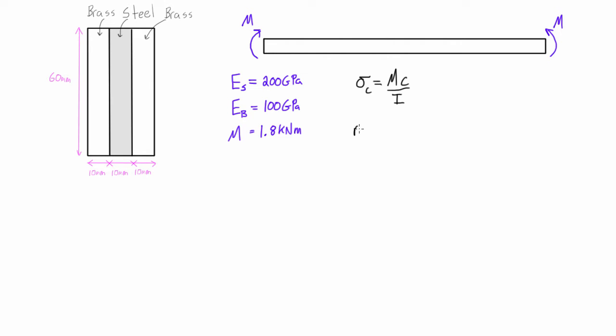So that factor, let's convert everything to brass here. So what we do is we take the ratio of Es over Eb. So this is the material that we will be transforming over the material that we're transforming into. So we get 200 gigapascals over 100 gigapascals and we find that n is equal to 2.